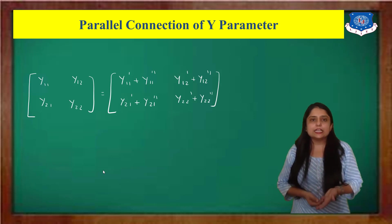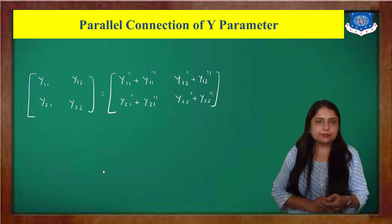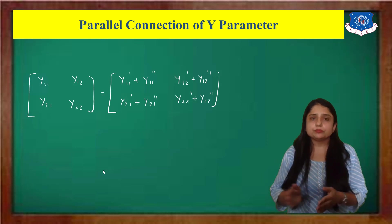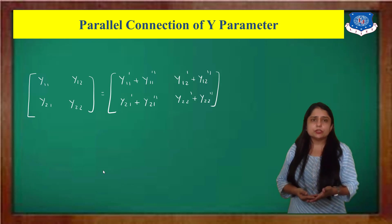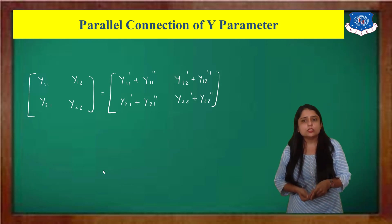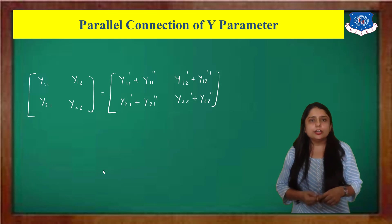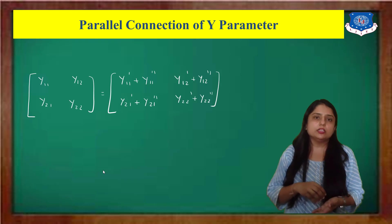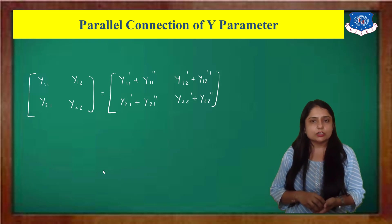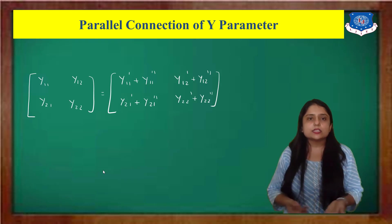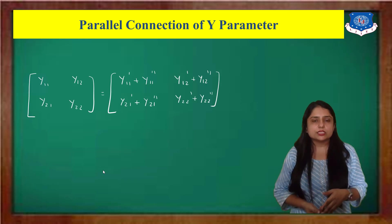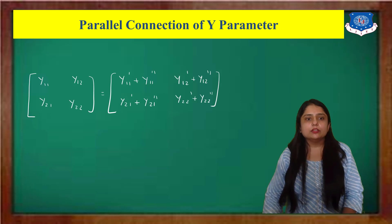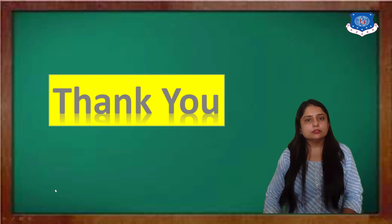So that gives us the overall Y-parameter for the parallel connection, and the overall ABCD parameter for the cascade or series connection. Our two-port network chapter is now complete. The next chapter is a simple one on poles and zeros, which is also studied in control systems — you may be asked to discuss poles and zeros or how to find stability using them. I hope this session is clear. Thank you.